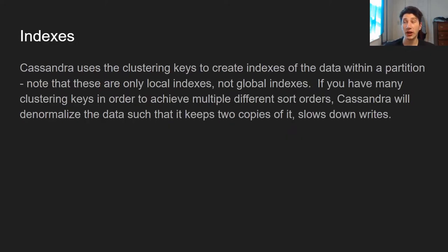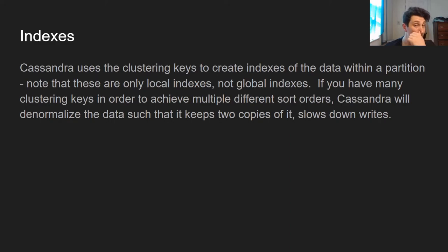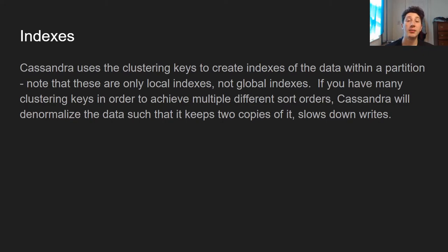Indexes are a really important part of ensuring fast read performance. In terms of indexes, Cassandra does not let you do any global secondary indexes — meaning there's no index to quickly filter based on some column that isn't the primary key across all partitions. Those indexes are local only, applying to one partition at a time. Cassandra allows you to index based on clustering keys, and it'll sort the data internally. If you have multiple clustering keys, Cassandra will actually denormalize the data and duplicate it on a node so you have two copies sorted in two different ways. The downside is that reads become faster for that clustering key, but writes take longer because you're updating two copies of the data at once.